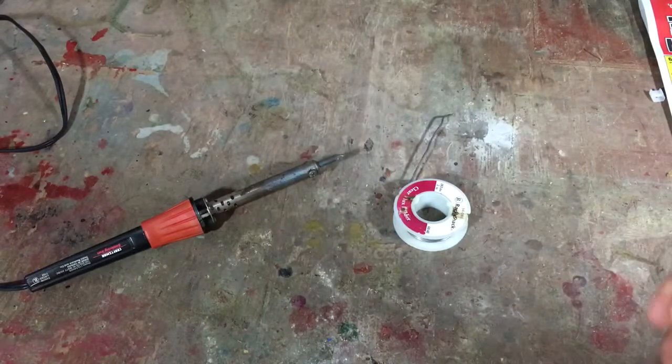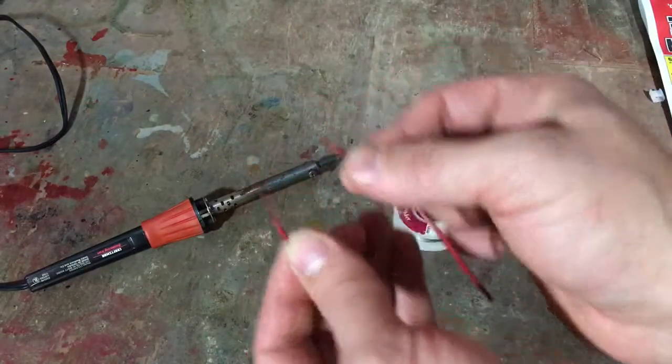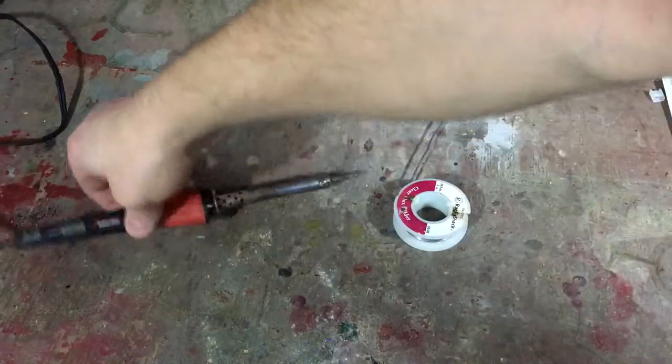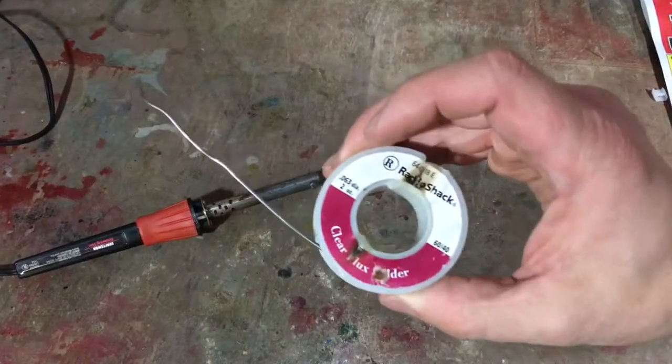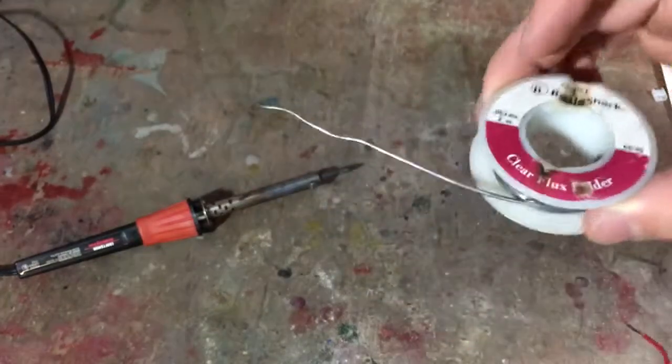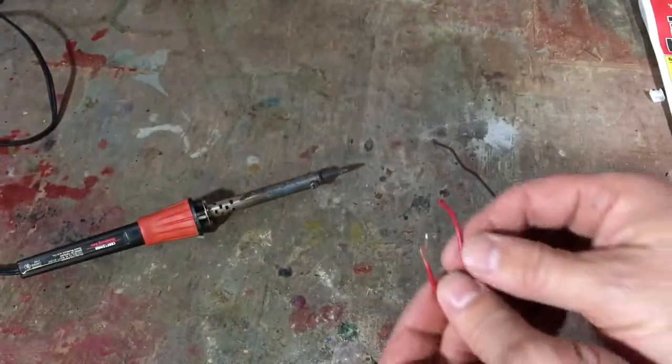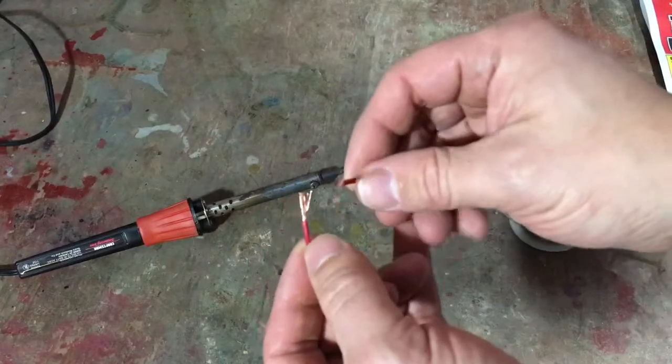Alright, in this video I wanted to show you how to solder two pieces of wire together. What you're going to need is a soldering iron and some solder. This solder has flux built into it so that it'll clean as it solders, and whatever wire you're trying to repair.